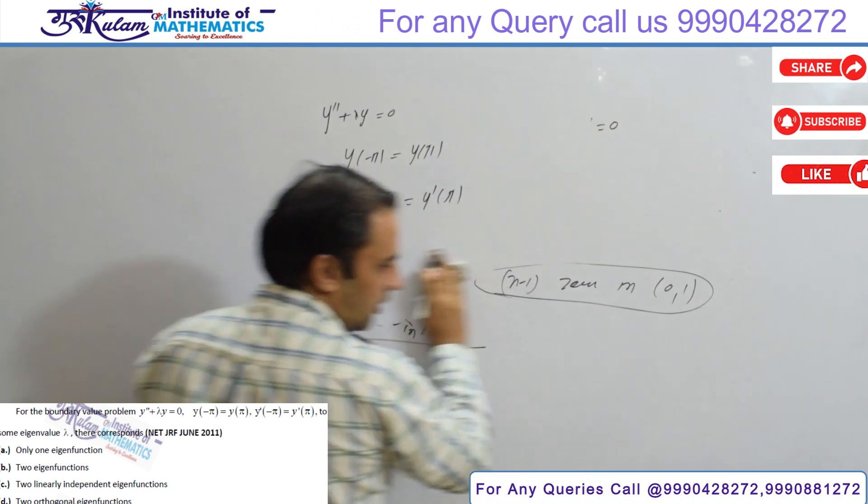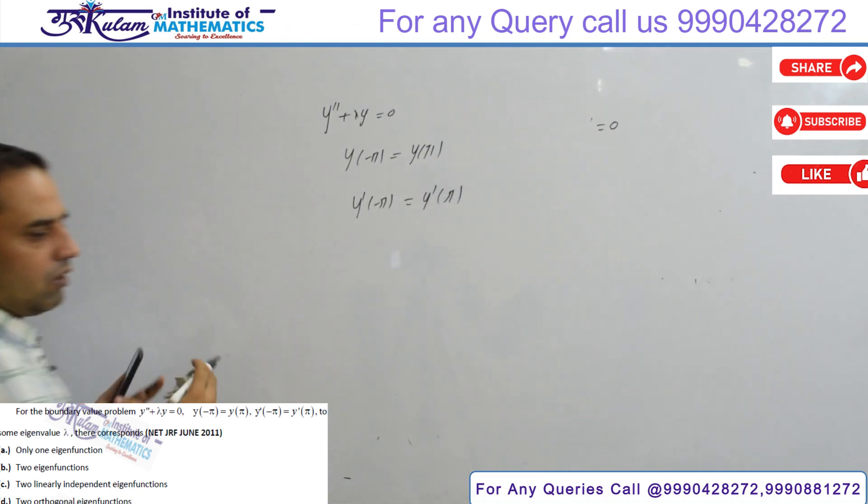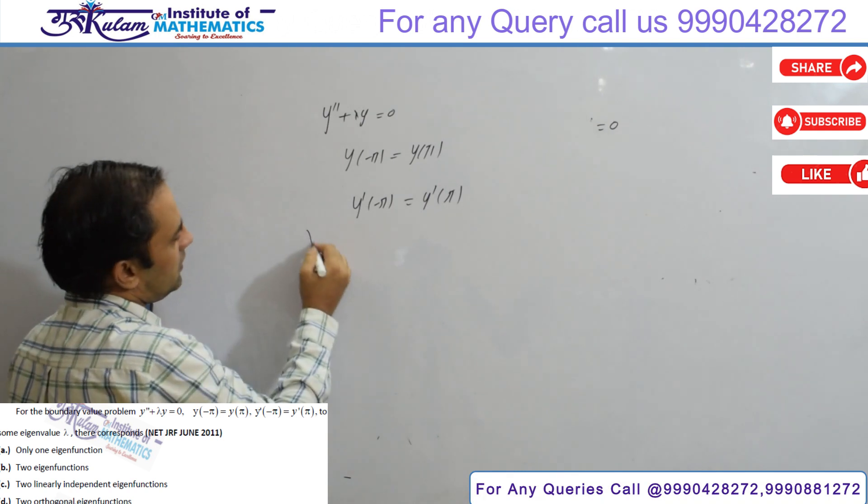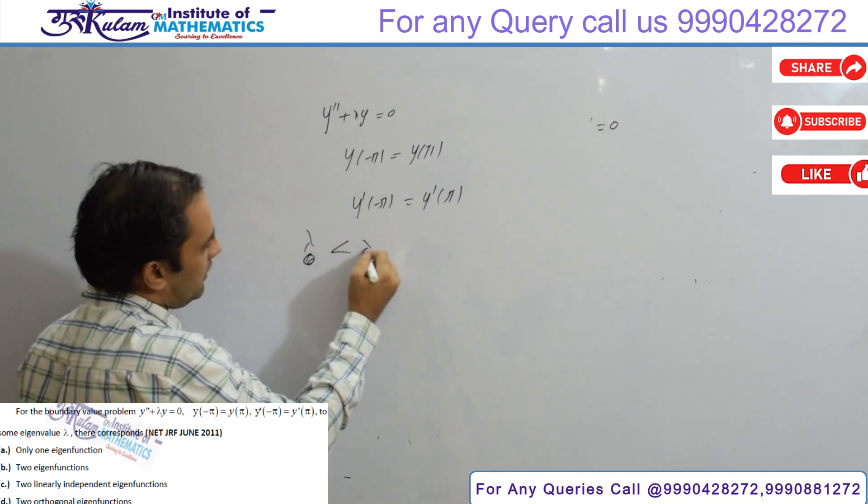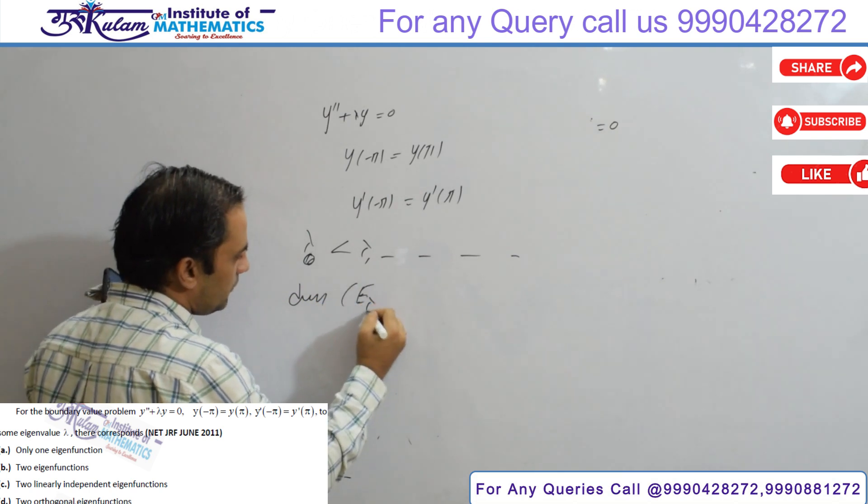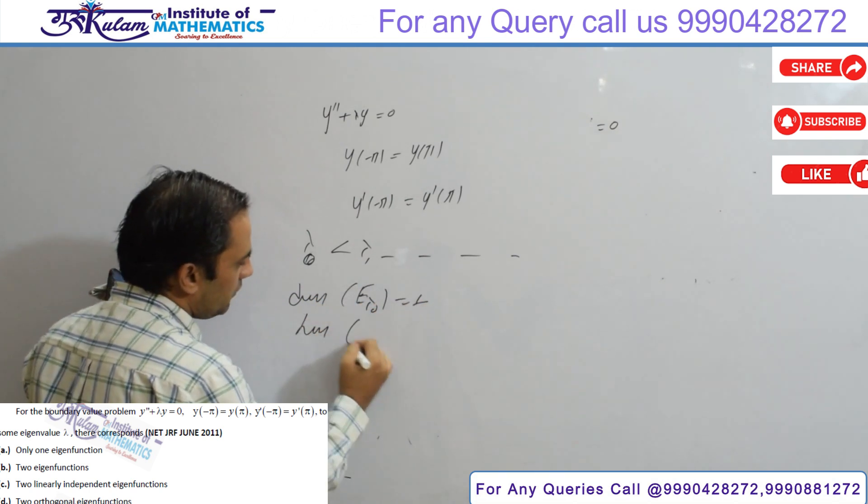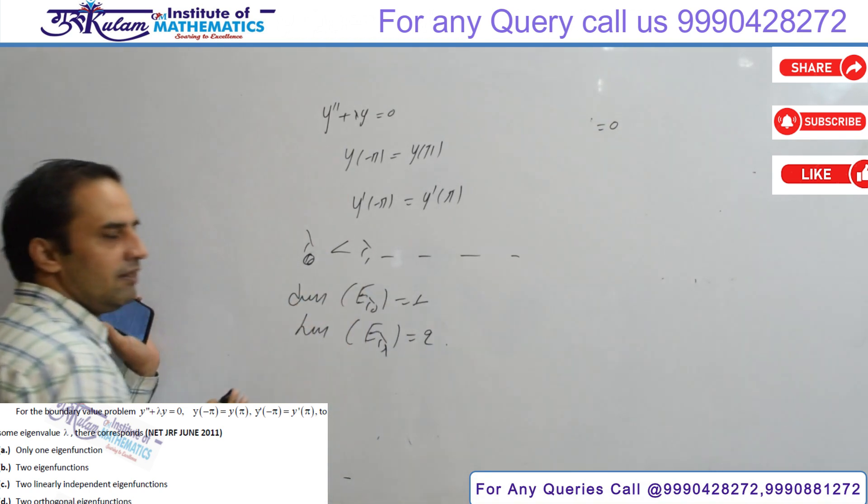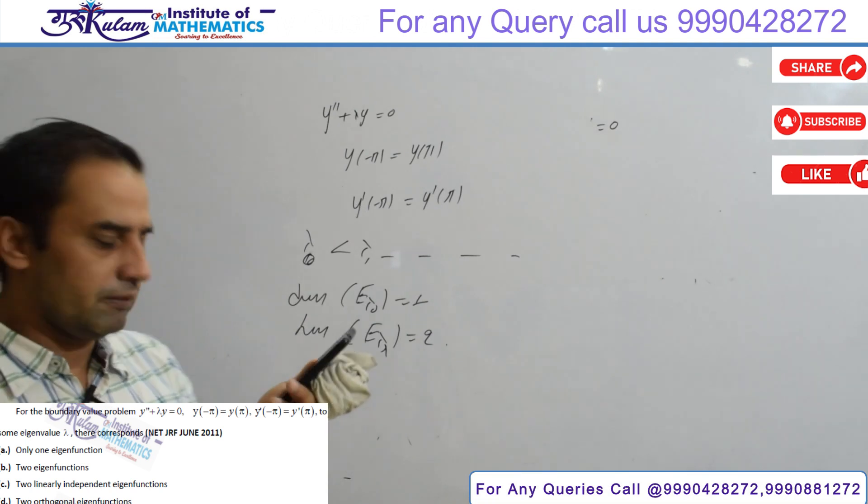Basically, this is a periodic boundary value problem, and in periodic boundary value problems you have a property that you have eigenvalue lambda naught less than lambda one and so on, and lambda naught corresponding eigenspace dimension is one dimension, and remaining eigenspace corresponding dimension is two. This is main information.